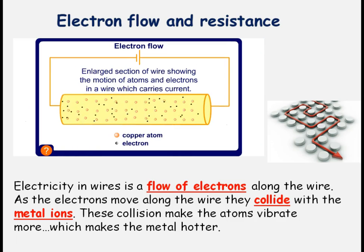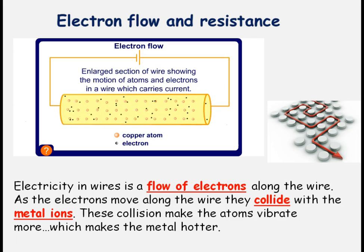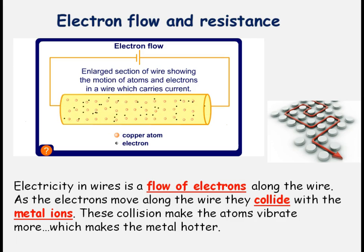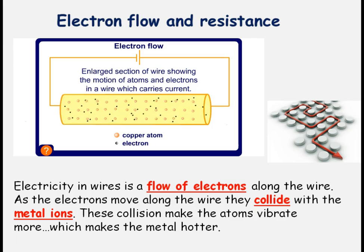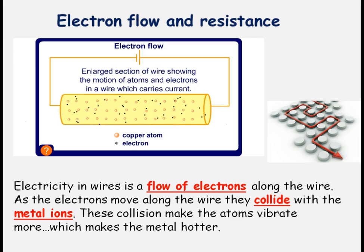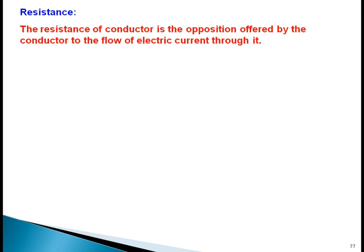In this animation, the small black particles are electrons and the big spheres are the copper atoms. When electrons are moving, they are colliding. Electricity in a wire is a flow of electrons along the wire. As the electrons move along the wire, they collide with the metal ions. These collisions make the atoms vibrate more, which makes the metal hotter. This opposition is resistance.